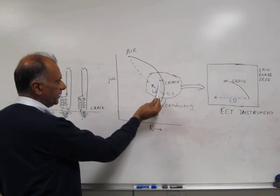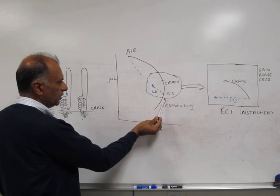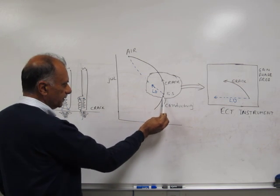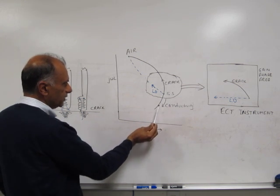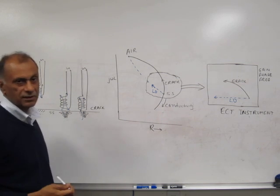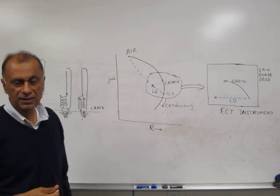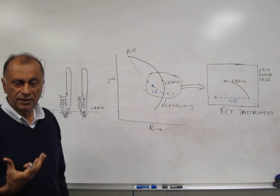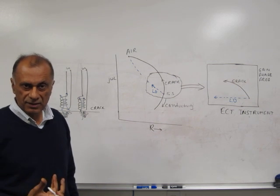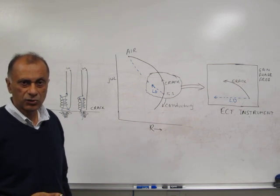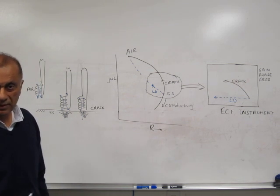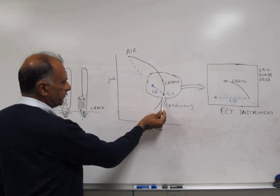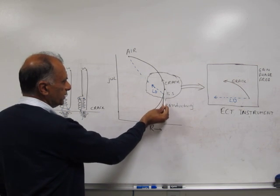This impedance change is shown by a curve also called the conductivity curve. If the conductivity increases in one direction, a crack acts like an increase in resistance, so when there is an increase in resistance the impedance will move in the opposite direction.